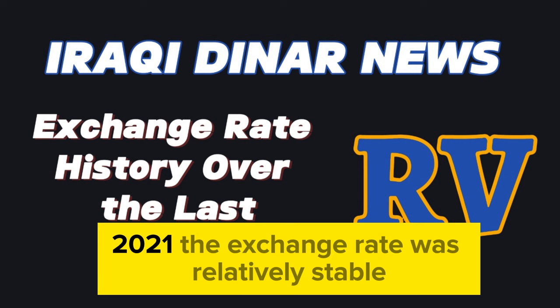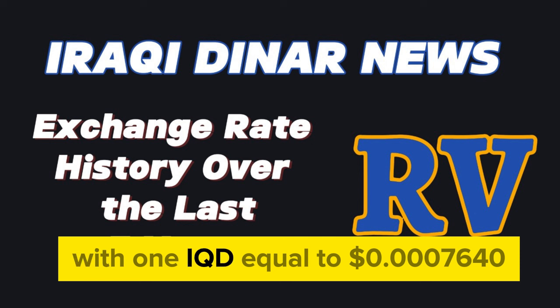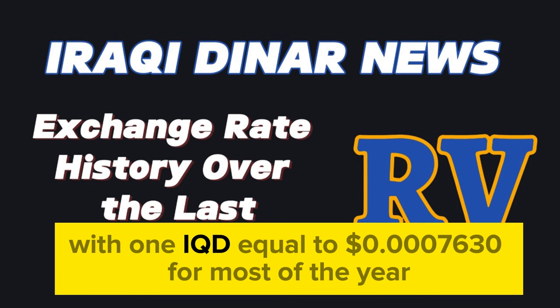In 2021, the exchange rate was relatively stable, with one IQD equal to 0.0007640 U.S. dollars. In 2020, the rate was also stable, with one IQD equal to 0.0007630 U.S. dollars for most of the year.